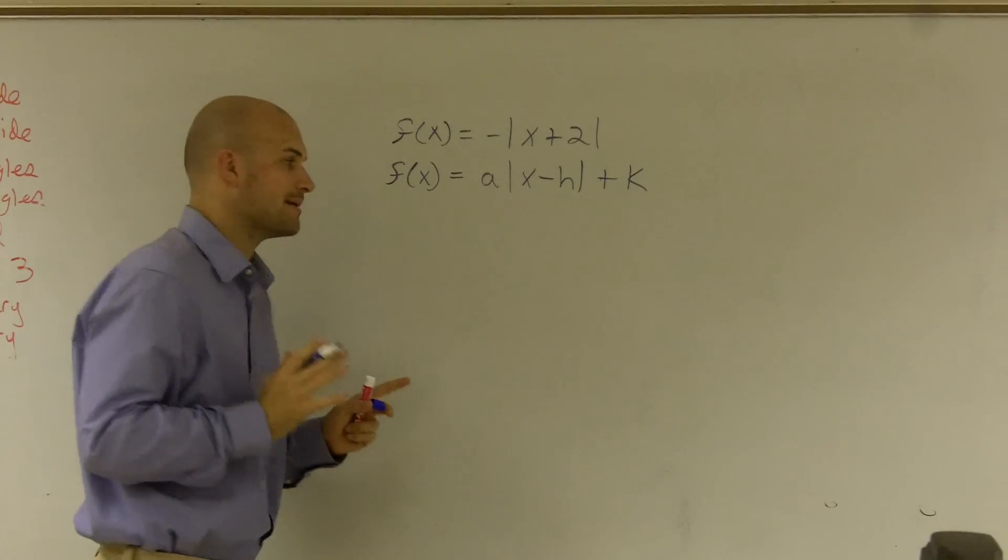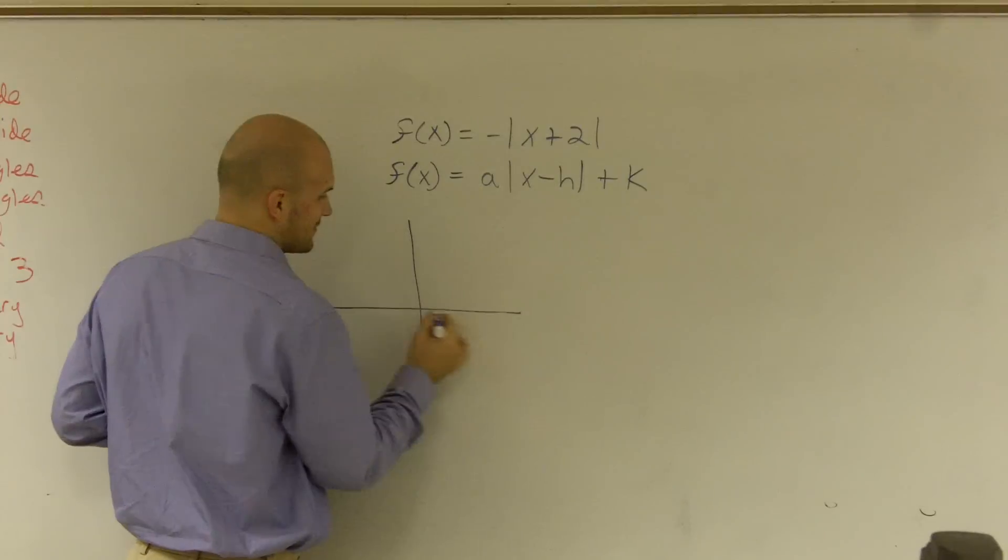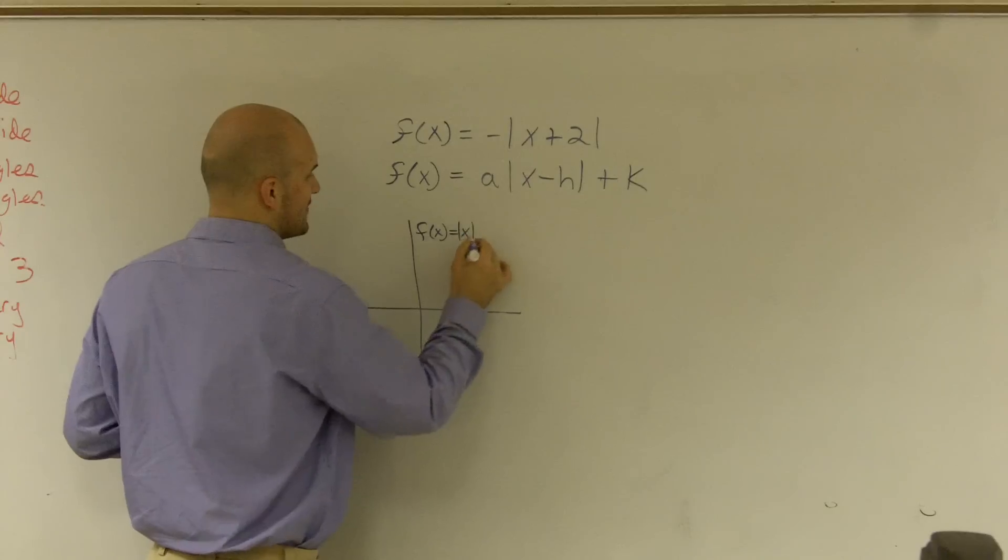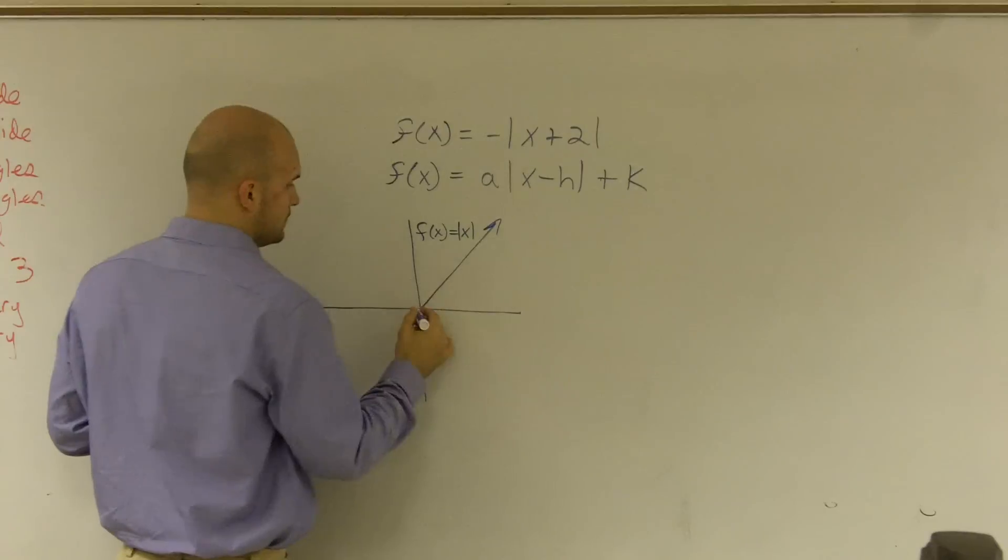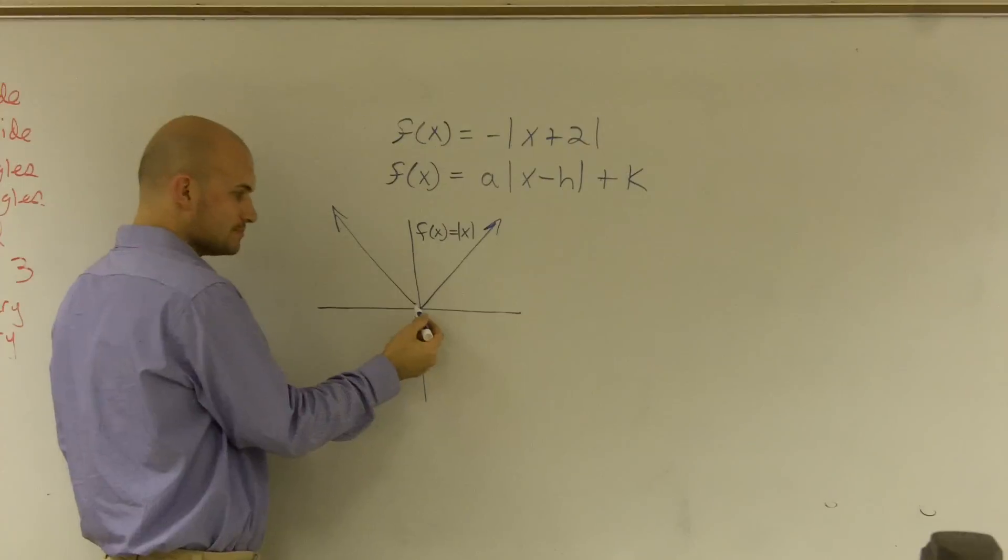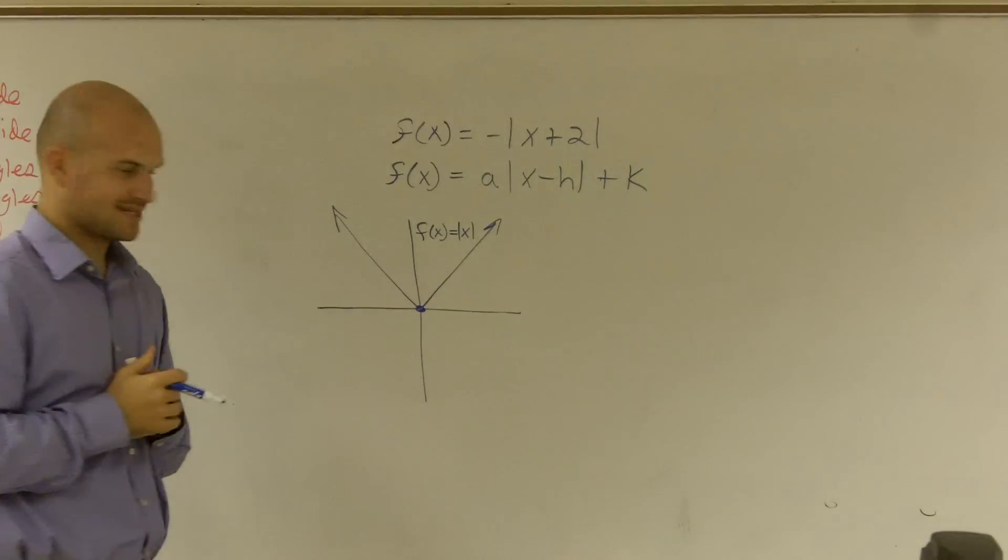There's a couple things we need to remember. First of all, we need to know what actually is an absolute value function. The absolute value function f(x) = |x| is going to look something like this, where this one has a slope of 1 over 1, and this has a slope of negative 1 over 1, and its vertex is at (0, 0).